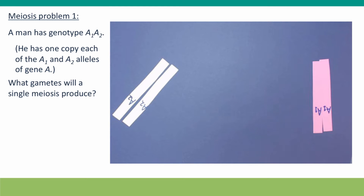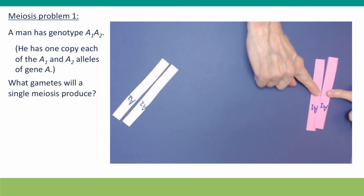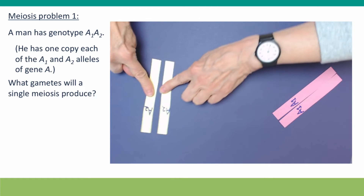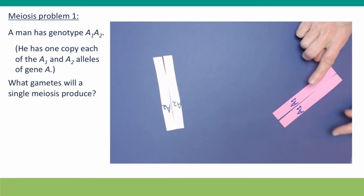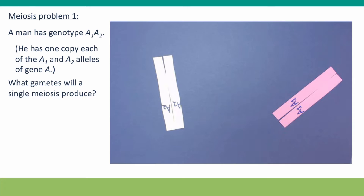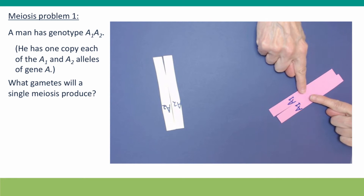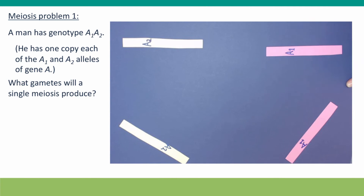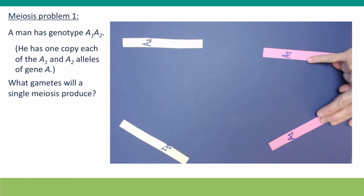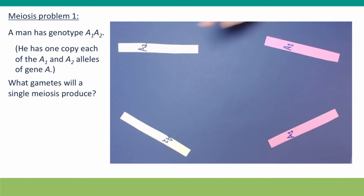Separation of the homologues is just like separation of sister chromatids in mitosis. Each homologue, consisting of two sisters, is pulled to the poles of the cell, and the cell divides. That's the end of meiosis I. Meiosis II is just like mitosis. The two sister chromatids are held together by loops of cohesin, attached by spindle fibers, moved to the center of the cell. The cohesin is cut by separase and the sister chromatids come apart, generating the four products of meiosis: two gametes with genotype A1, two gametes with genotype A2.